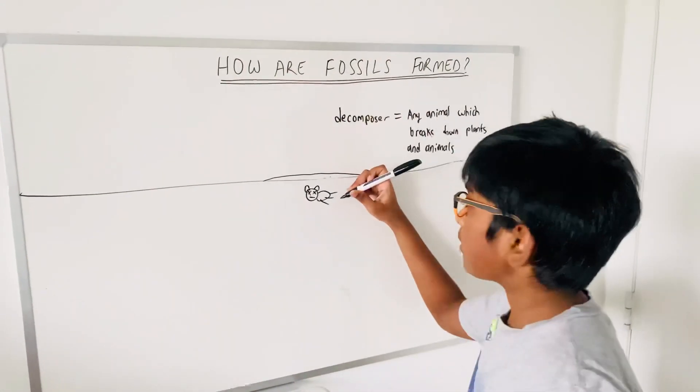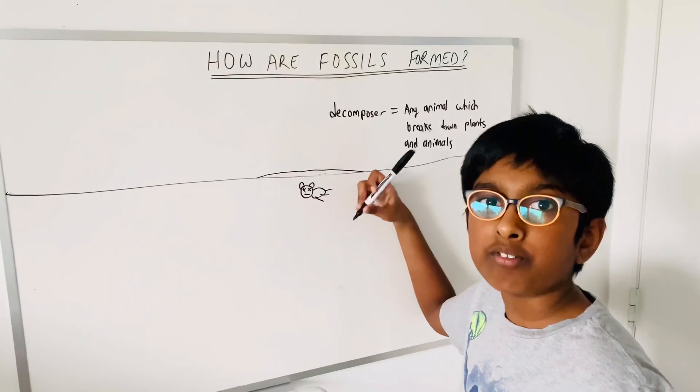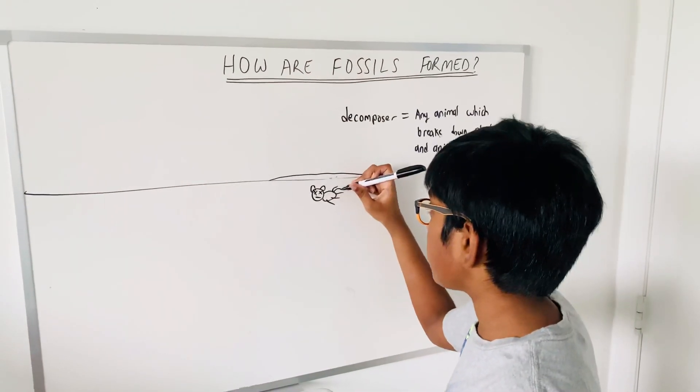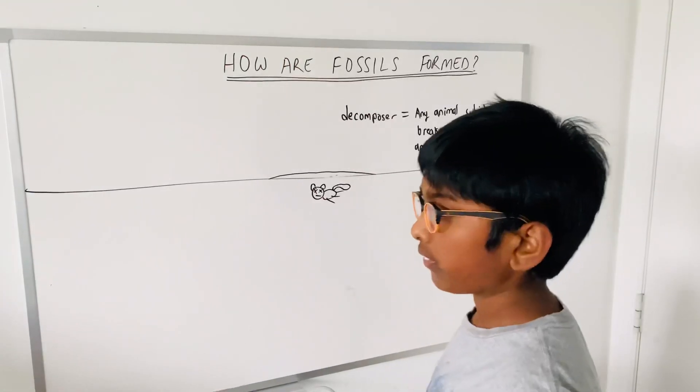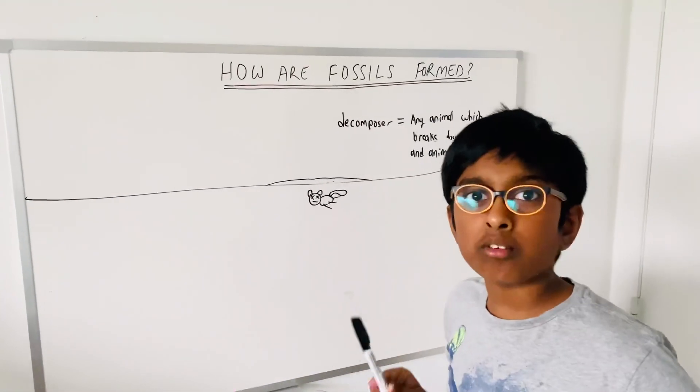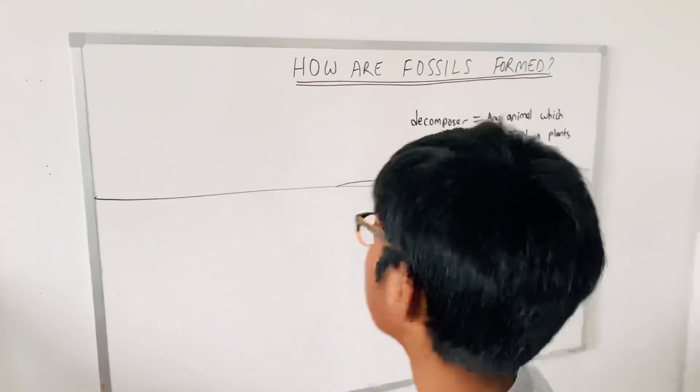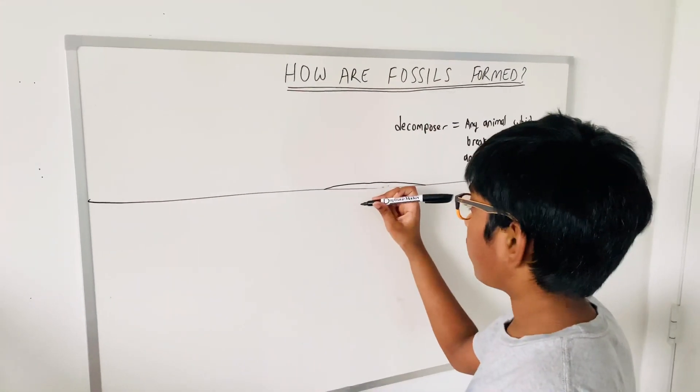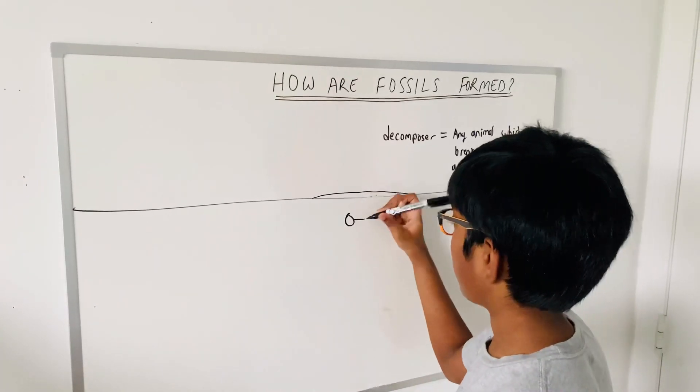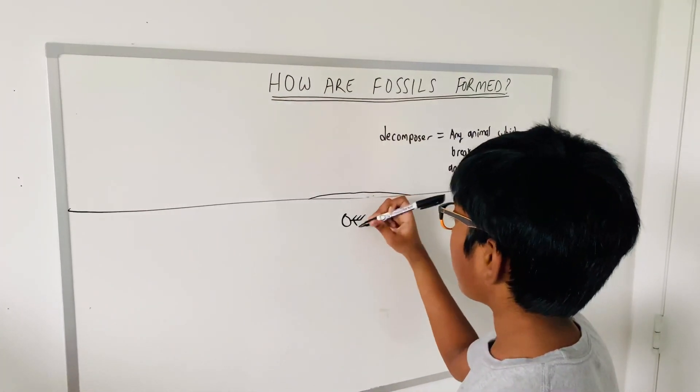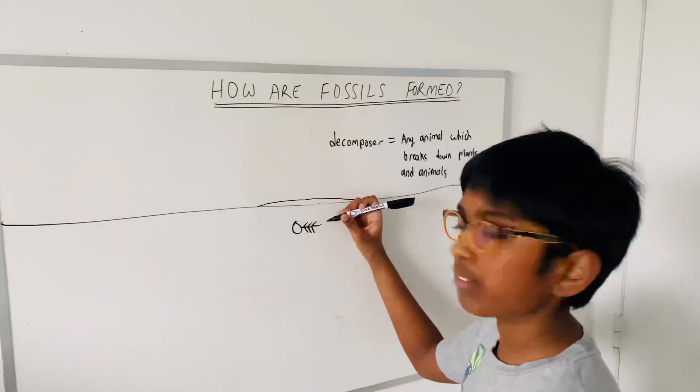So, then the decomposers such as earthworms and fungi start eating the matter, and the whole body starts to break down. When it's broke down, it looks like this. Only the skeleton is left.